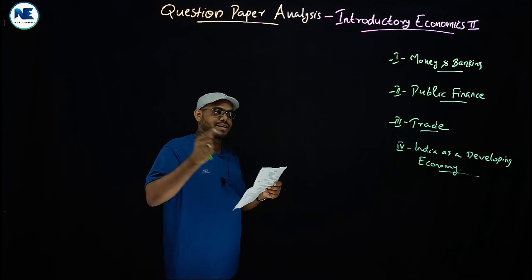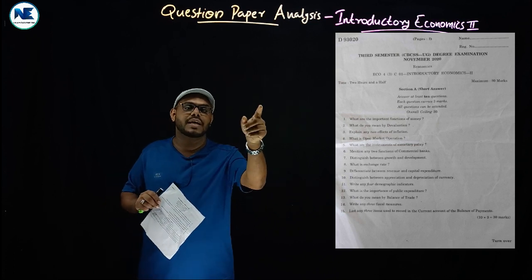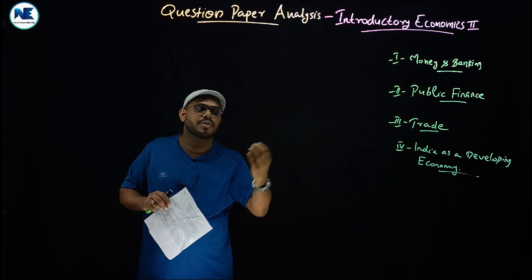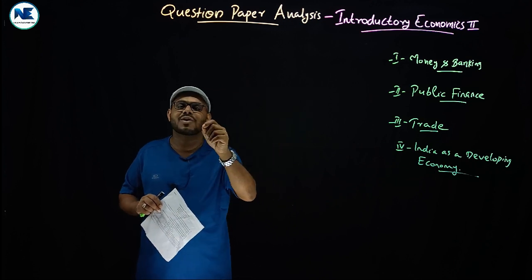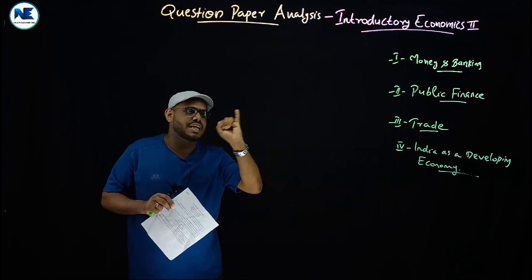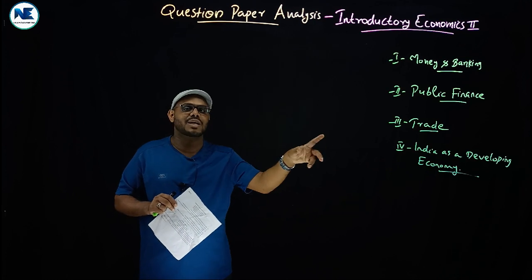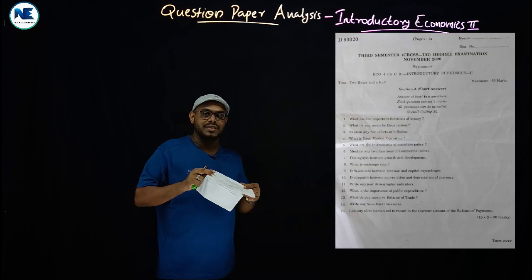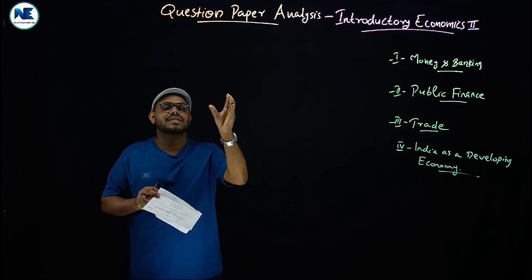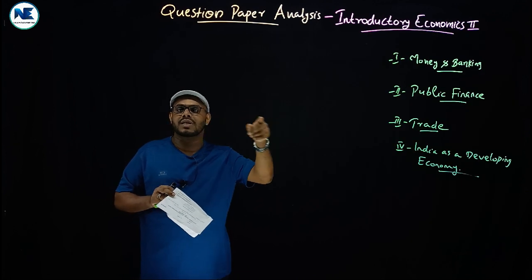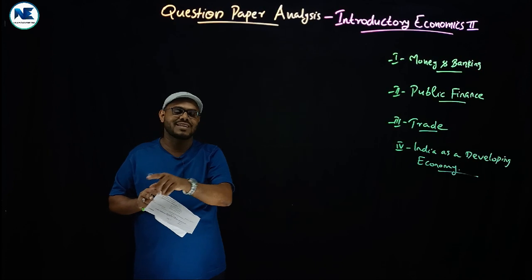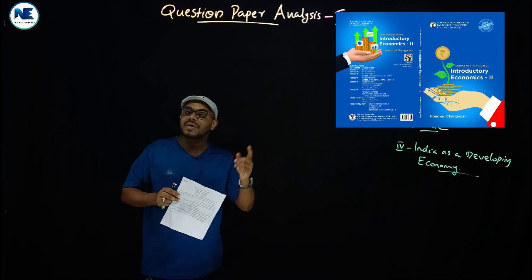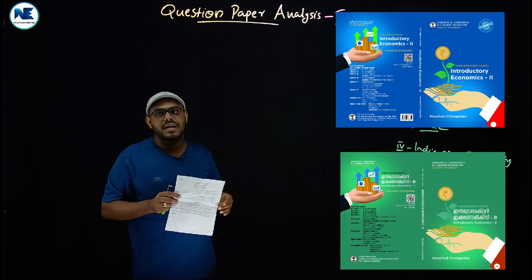The eighth question: what is exchange rate? From Module 3 — think about the exchange rate between the Indian rupee and the US dollar; how many rupees are required to purchase one dollar is the exchange rate. Key concepts: fixed exchange rate, flexible exchange rate, devaluation, revaluation, appreciation, and depreciation. The ninth question: distinguish between revenue and capital expenditure, related to budgeting — revenue account and capital account, revenue receipts and revenue expenditure, capital expenditure. Refer to the study material and uploaded videos.